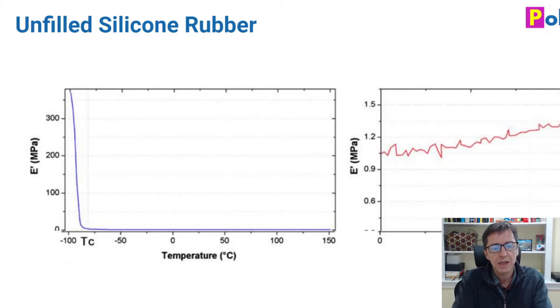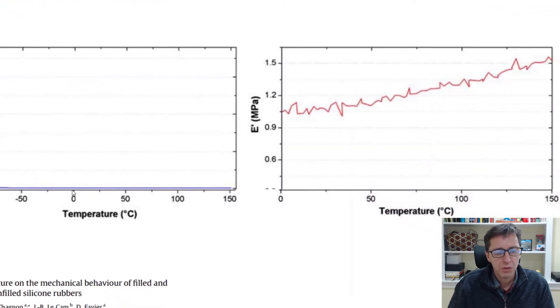But then if we zoom in for the range between say 0 and 150 degrees C, you can plot that to the right. We'll see that in that domain, as the temperature increases, the modulus actually increases. This is the weird behavior that I mentioned earlier.